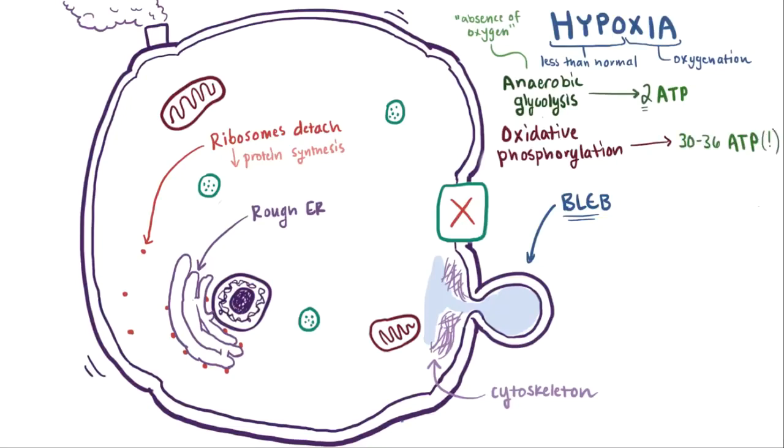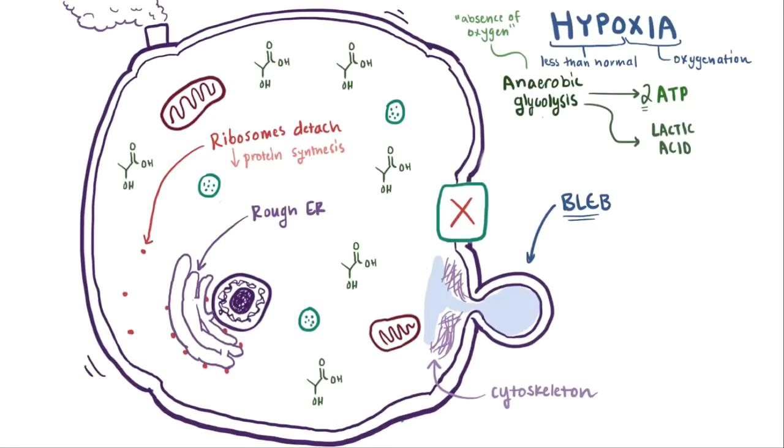So, it helps a little, but what also happens is it produces a byproduct called lactic acid, which lowers the pH inside the cell. This more acidic environment can denature or essentially destroy proteins and enzymes.